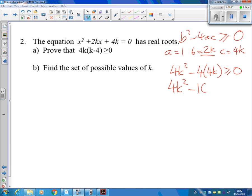4k squared minus 16k is greater than or equal to 0, and we can factorize that, taking a 4k out of that and leaving it as k minus 4, and that's exactly what we wanted, greater than or equal to 0.